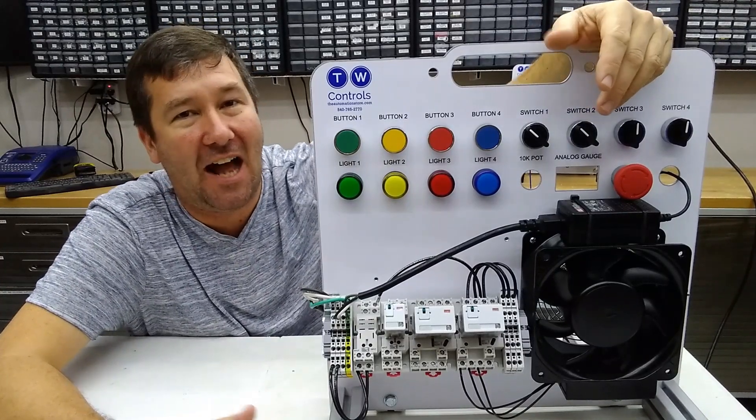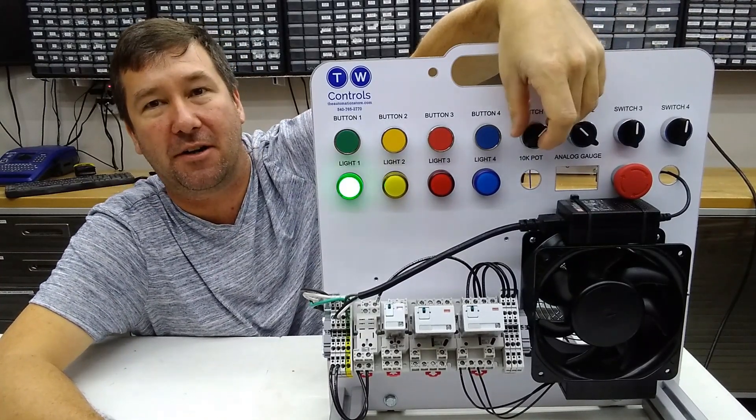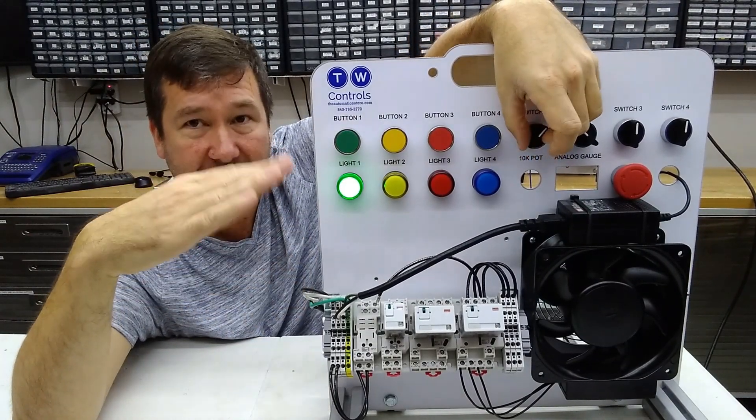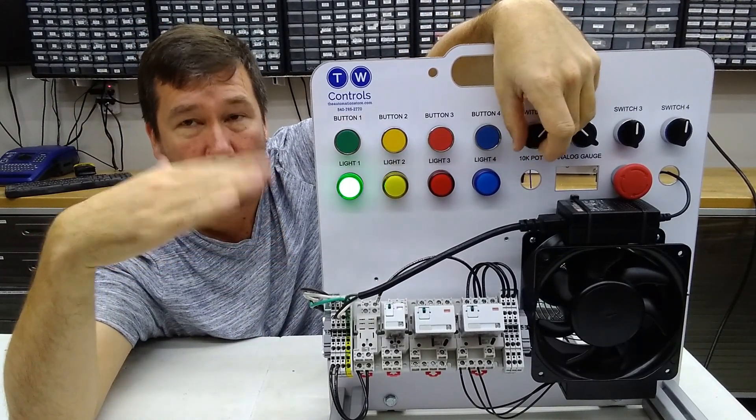Hi, this is Tim, and today we're going to talk about how to make a basic two-wire control circuit. We're also going to wire to our relay and show how the contacts move back and forth between the normally open, normally closed.